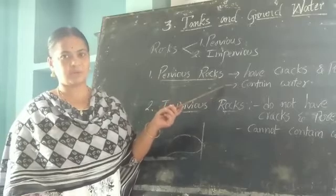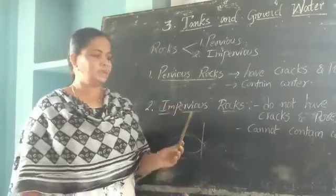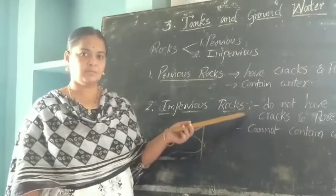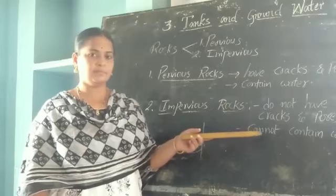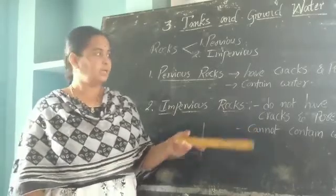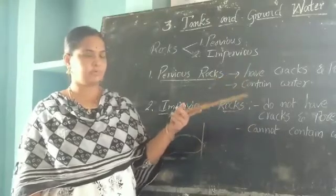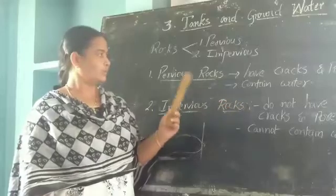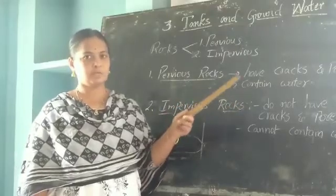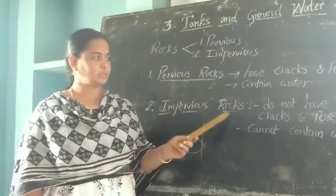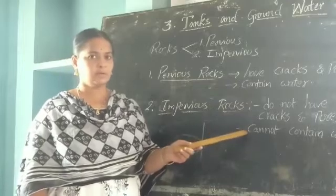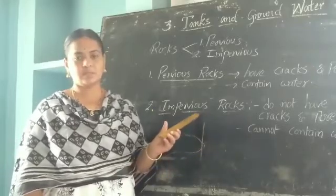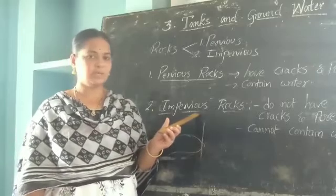For example, sandstone in our Prakasam district is a pervious rock. Next, impervious rocks do not have cracks and pores, so they cannot contain water. However, groundwater accumulates above such rocks. Through the cracks and pores of pervious rocks the water goes deep into the land, but groundwater accumulates above impervious rocks.